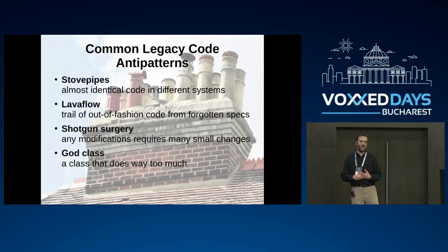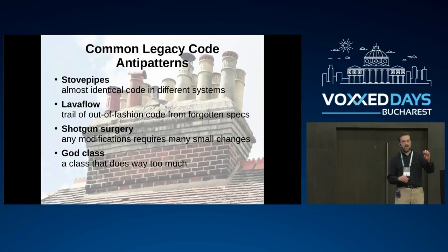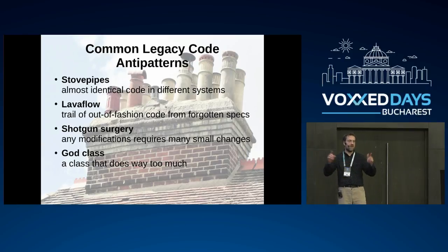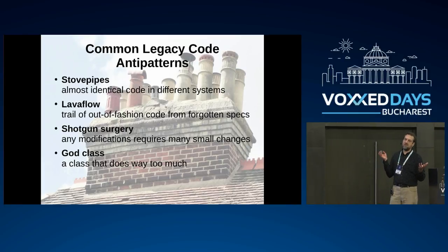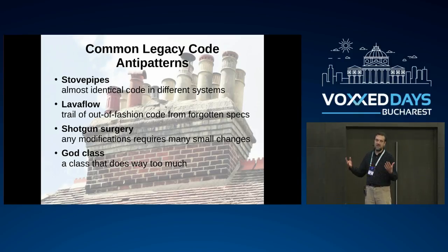Another typical anti-pattern is shotgun surgery, which is in a sense the opposite of stovepipes. It means there are a few critical functions used more or less everywhere. Every time you add a new parameter to some input, you have to add it to half of your code because those methods are used everywhere. Ideally, if you want to fix a bug, you should only have to touch one module, one class in a module, one method in one class — something cohesive. But in a legacy system, you really have to touch so many things just to fix a single thing.